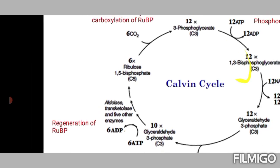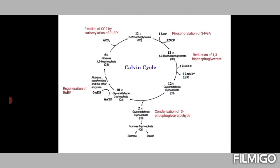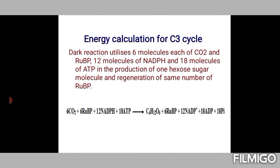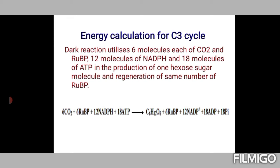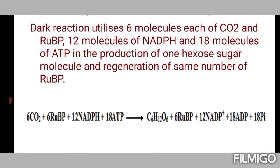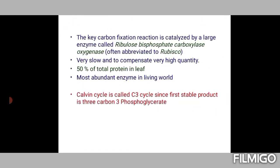The energy calculation for the C3 cycle: 6 CO₂ + 6 RuBP + 12 NADPH + 18 ATP → C₆H₁₂O₆ (glucose/carbohydrate). The RuBP used is reformed, and 12 NADPH, 18 ADP, and 18 inorganic phosphate molecules are produced. The critical enzyme involved is ribulose bisphosphate carboxylase/oxygenase (RuBisCO).